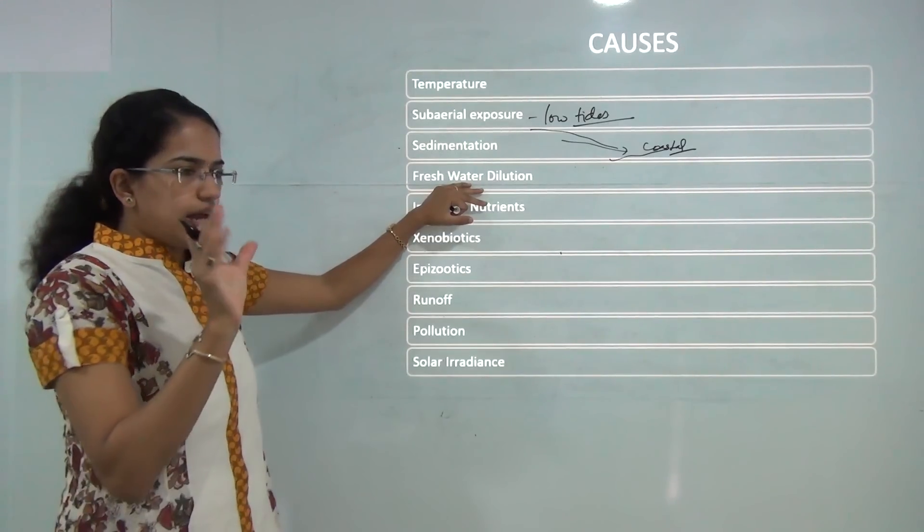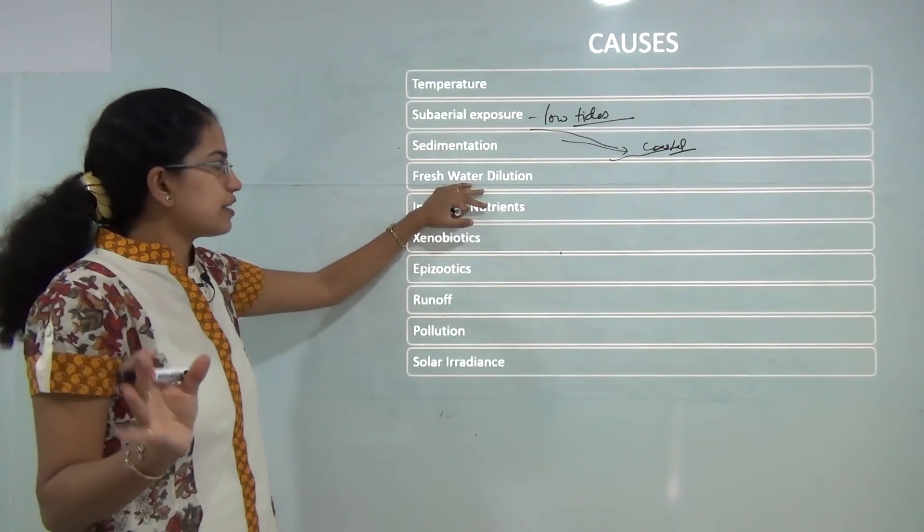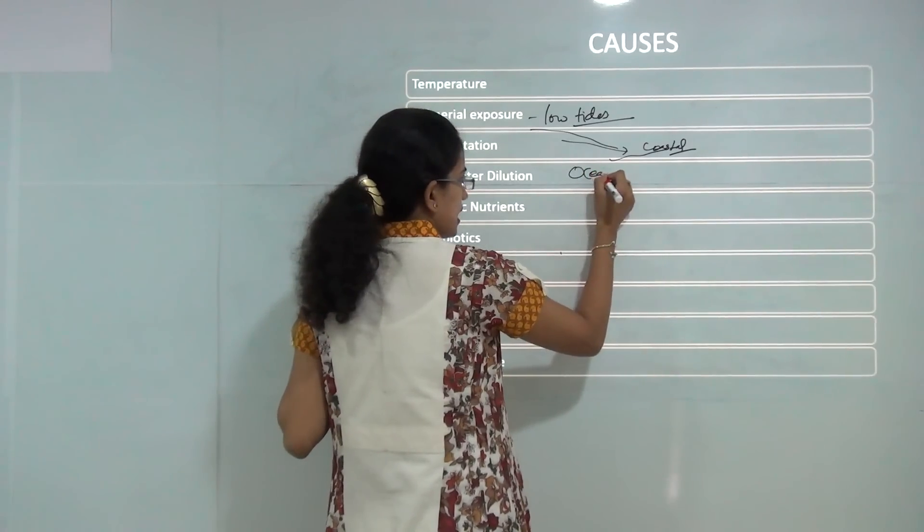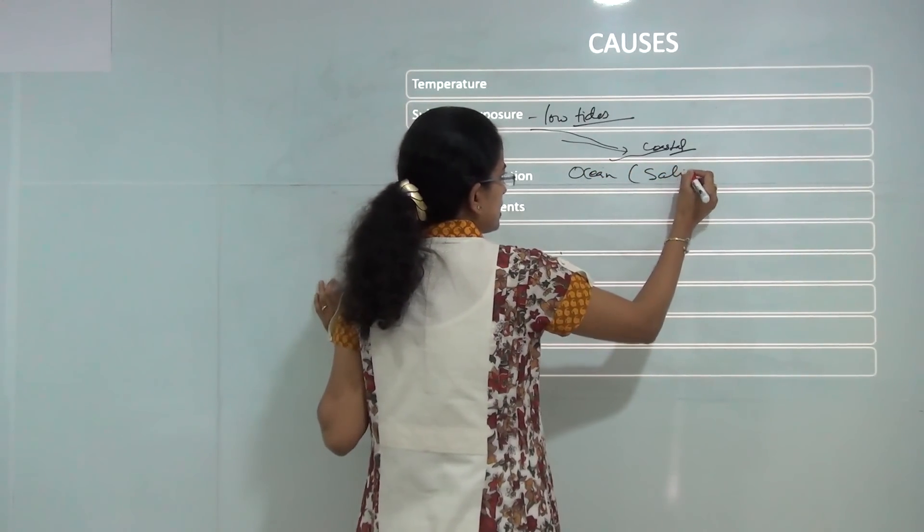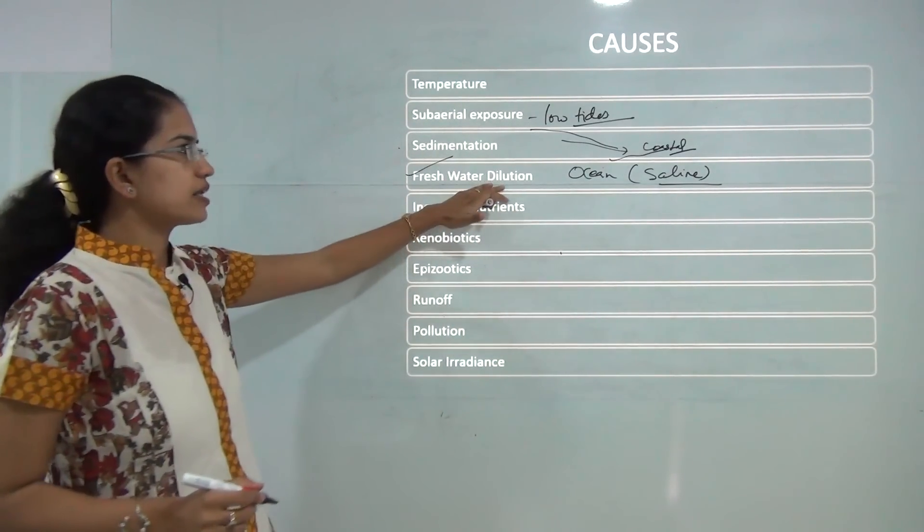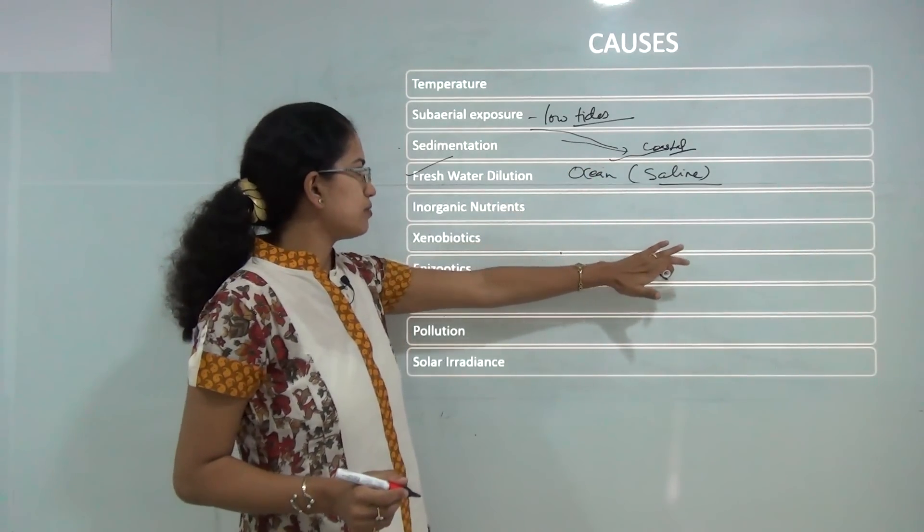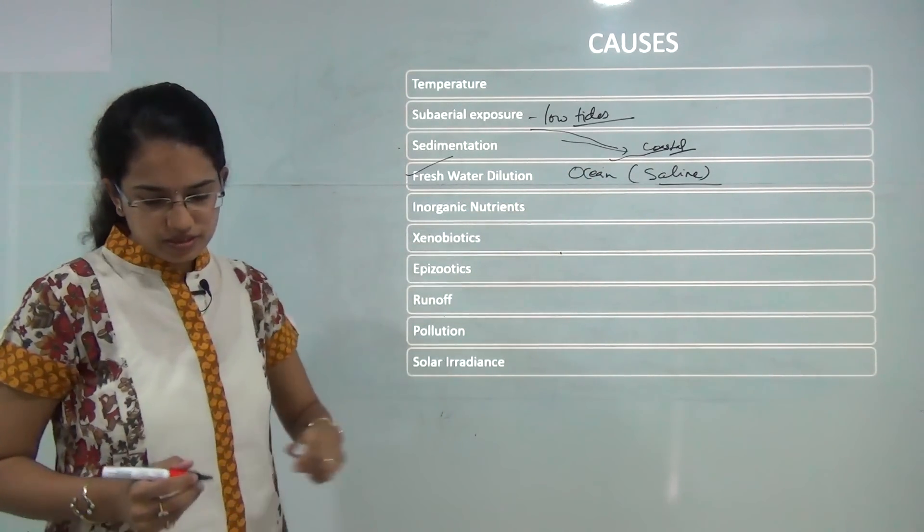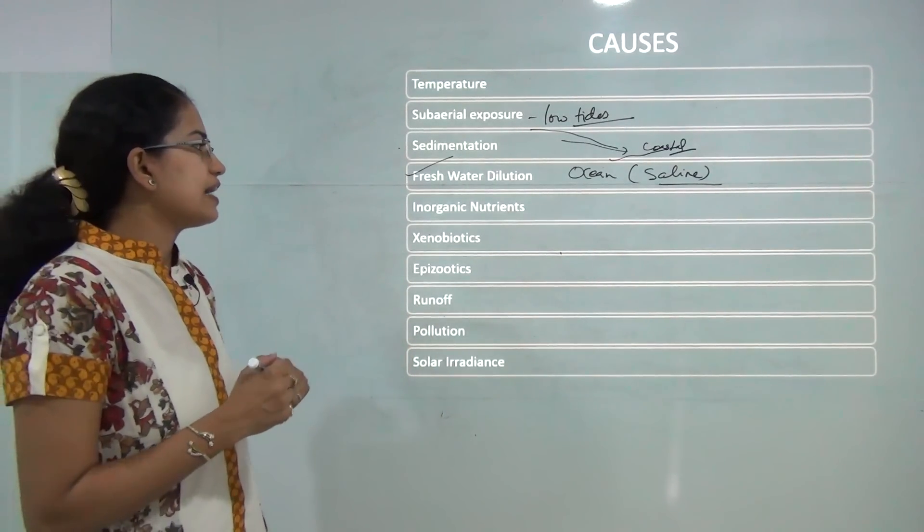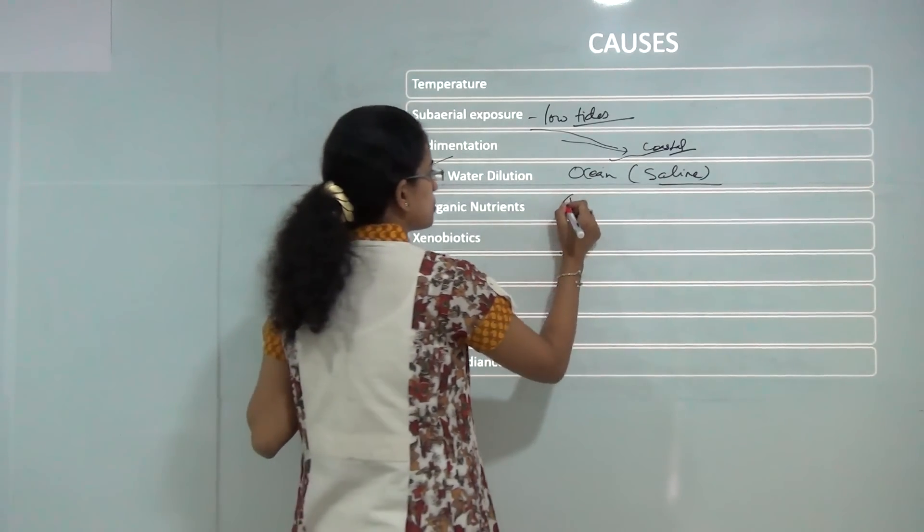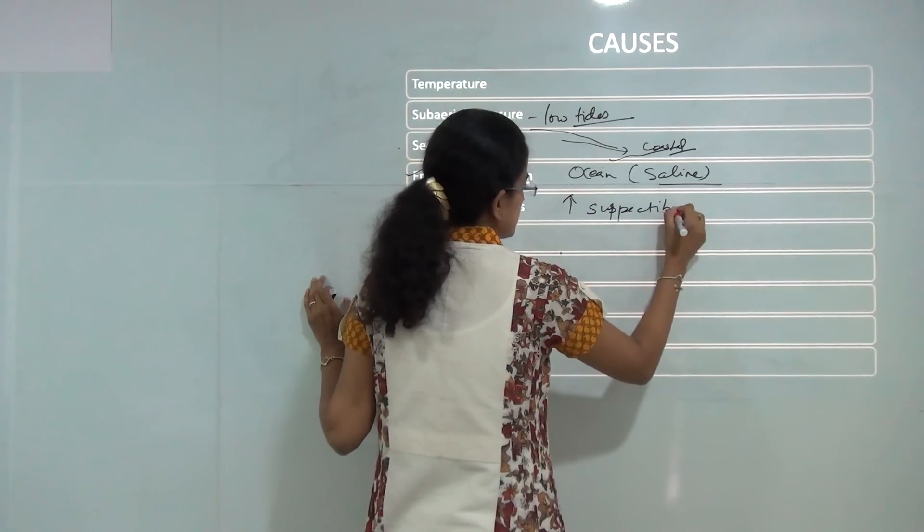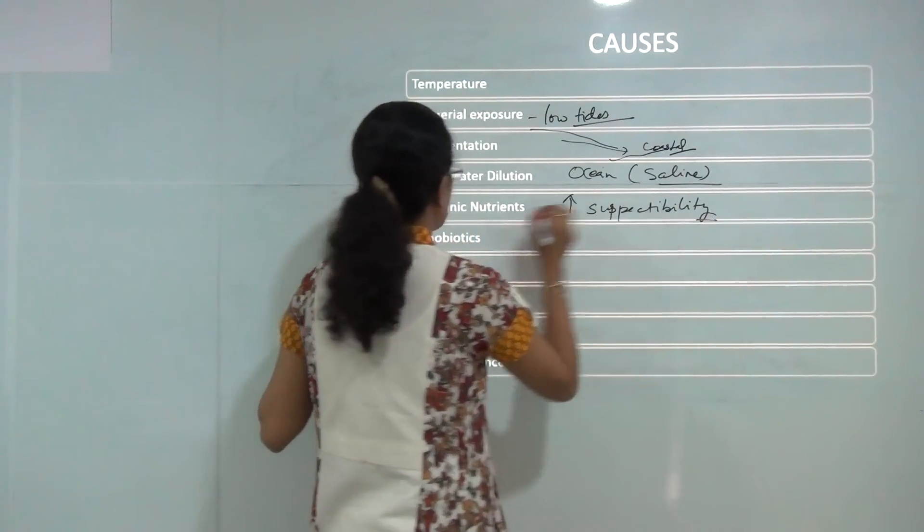As I said they can tolerate a very narrow range of temperature. If there is a lot of fresh water that is coming into the ocean which is saline what would happen is there would be a huge dilution that would occur and that would again affect the coral population here. You have inorganic nutrients which are present which increase the probability of disease and the susceptibility to diseases.